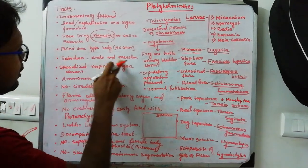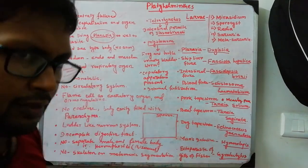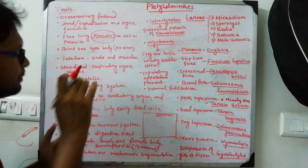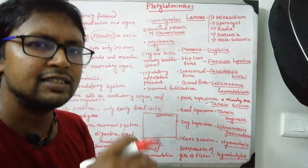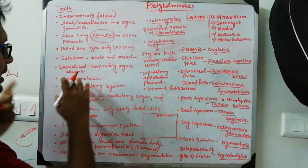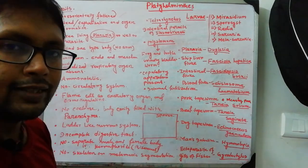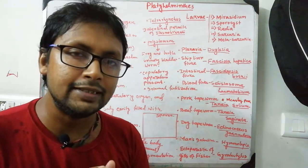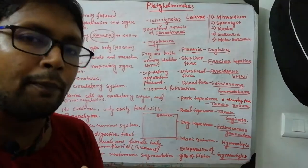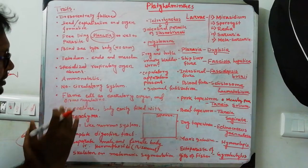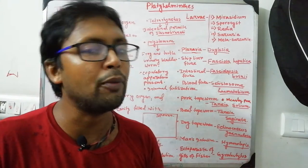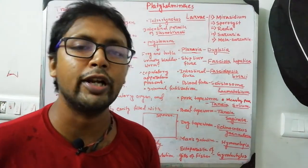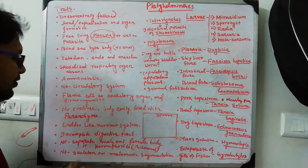The most important thing is that between ectoderm and endoderm, mesoderm is present and it is parenchymatous. No specialized respiratory organ and no vascular system is present - respiration mainly occurs by surface respiration through the body surface. Specialized respiratory organs like lungs have not developed. They are ammonotelic - ammonia is released as the excretory product. No circulatory system; no blood vessels are present. Flame cells may or may not be present as excretory and osmoregulatory organs.